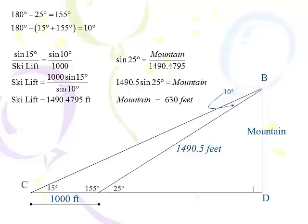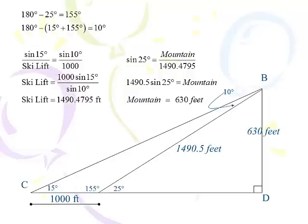We started with law of sines, and then we finished with right triangle trigonometry. So, the height of the mountain is 630 feet, and this all kind of makes sense there. You could find some more information here, but normally this is what we do. We ask for the height of the ski, the length of the ski lift, and we ask for the height of the mountain.